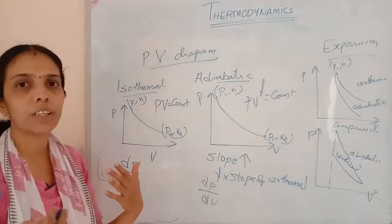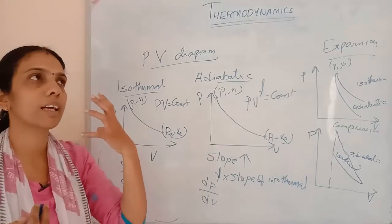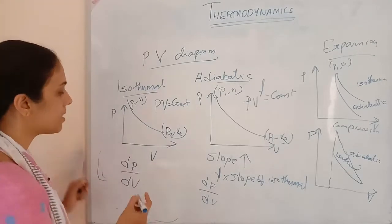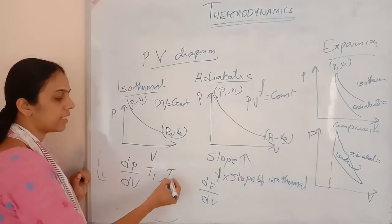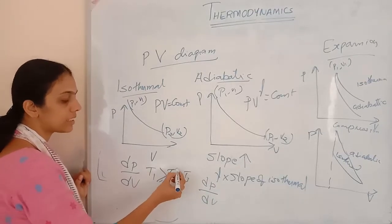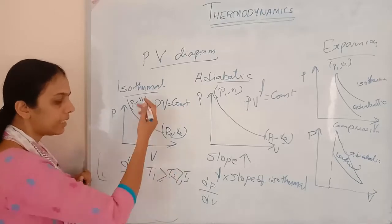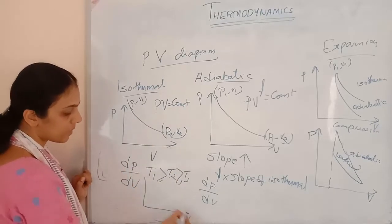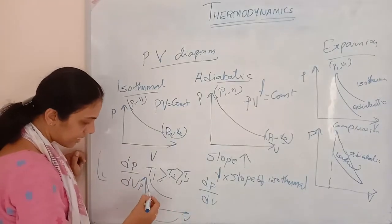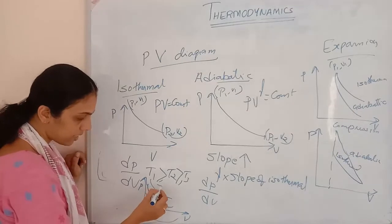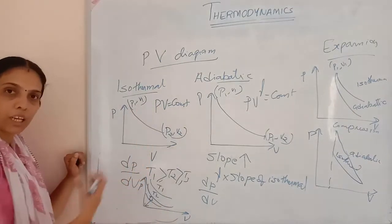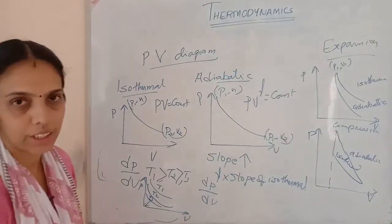If temperature is increasing from T1 to T2 to T3, where T1 is greater than T2 greater than T3, the isotherms in the PV diagram come closer to the origin as temperature decreases. We will learn more about this in the next chapter.